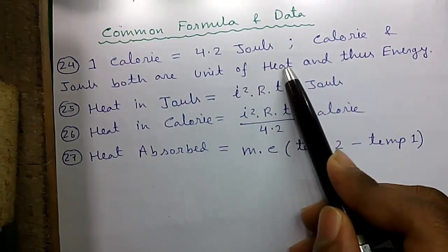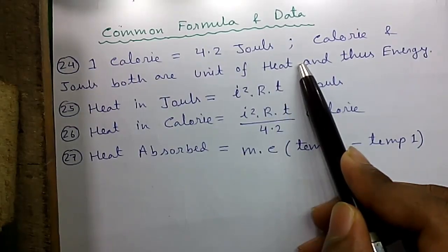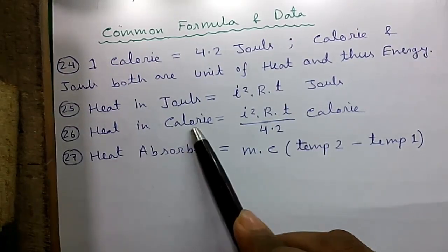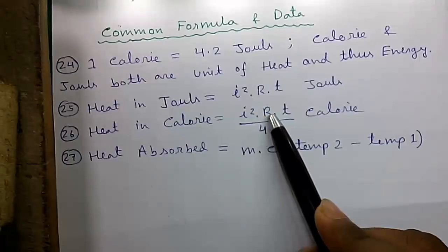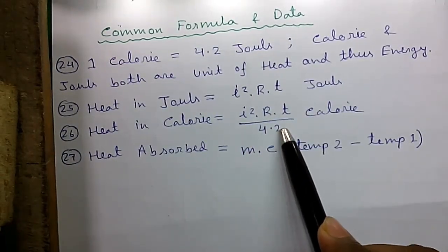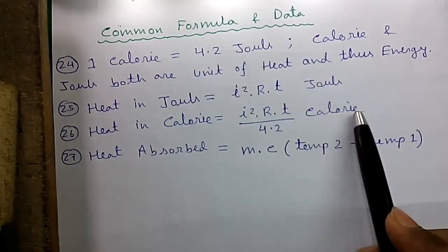Heat in joules equals I squared RT joules, where I is the current in ampere, R is the resistance in ohm, and T is the time in second. Heat in calorie is I squared RT by 4.2, because 1 calorie equals 4.2 joules.